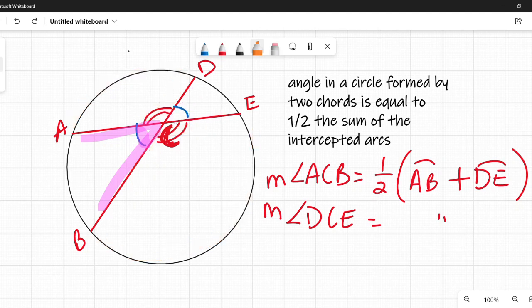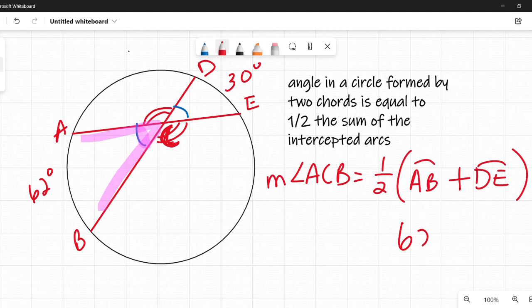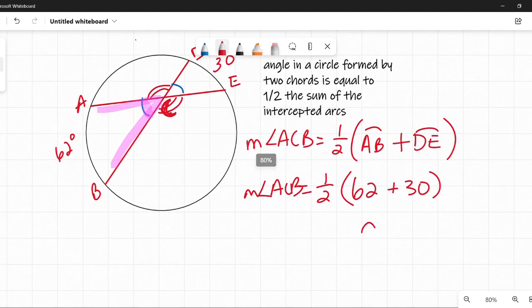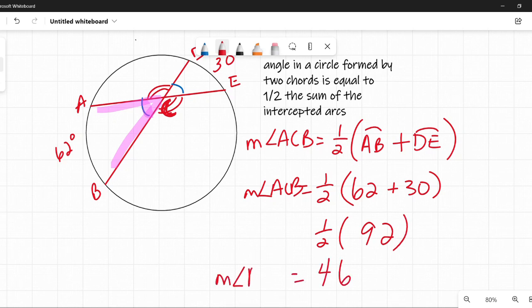Let's put some numbers in here and see what it actually does. So, let's say I'm asked what is the measure of angle ACB. And I'm told that this arc AB is 62 degrees and this arc DE is 30 degrees. Well, I plug those in. Those are the intercepted arcs 62 and 30 degrees and I'll get my angle ACB. Well, 62 plus 30 is 92 and one half of 92 is 46. So, the measure of angle ACB is 46 degrees and so is the measure of angle DCE.